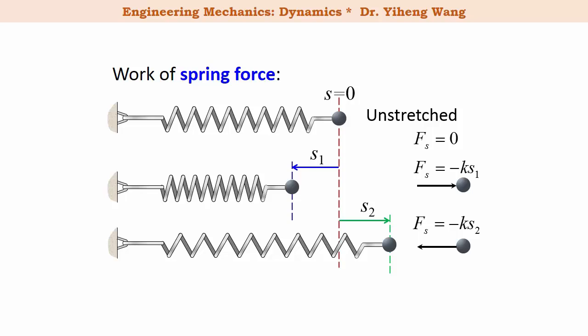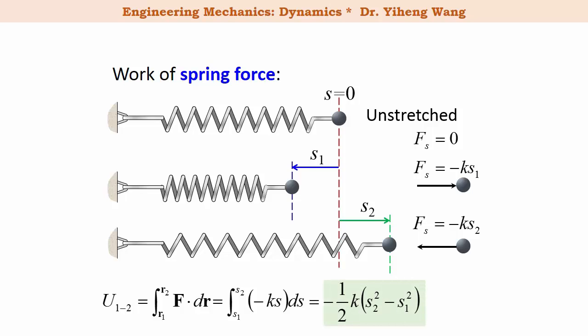Therefore, during this process from position s1 to s2, the total work done by the spring force can be evaluated using the scalar form of the equation, which equals the integration of negative k times s ds from s1 to s2. We can derive this equation to calculate the work done by the spring force. When using this equation, be careful that s1 and s2 must be displacements measured from the neutral position of the spring — they cannot be measured from some other reference point.